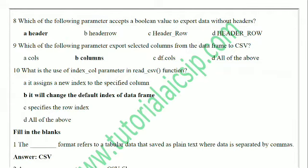Question 9: Which of the following parameters exports selected columns from the DataFrame using `to_csv`? If you want to export specific columns, the correct parameter is `columns`. You can directly pass the column names to this parameter. See the full details in the CSV to DataFrame playlist.